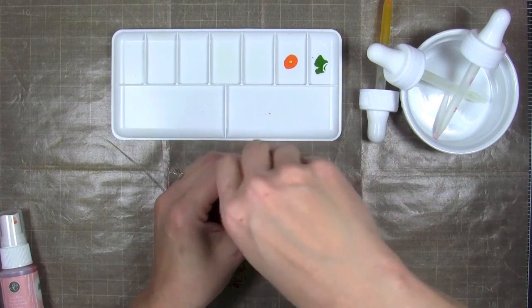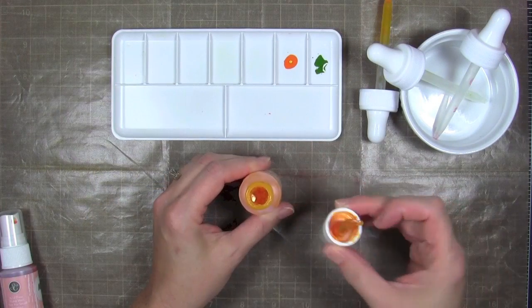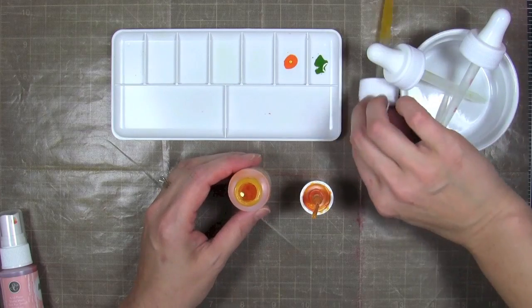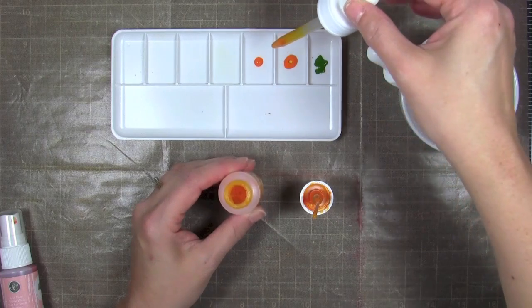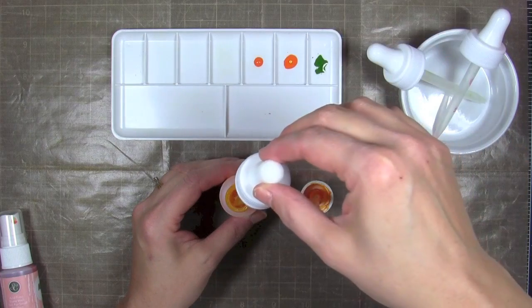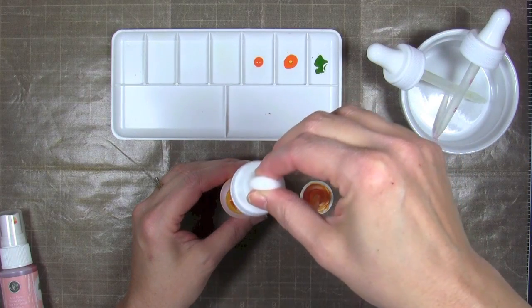I shook the bottles side to side and then I'm going to take my dropper tools and get some droplets of color directly from the bottle.